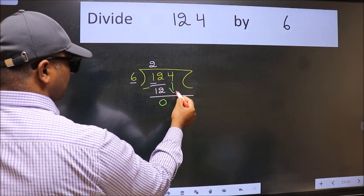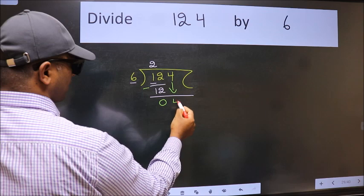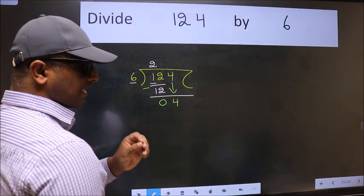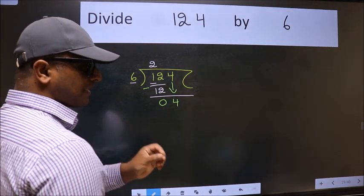After this, bring down the beside number. So 4 down. After this step, the mistake happens. And the mistake is this.